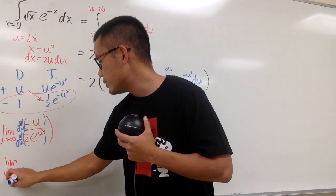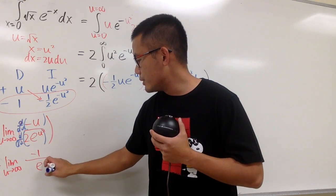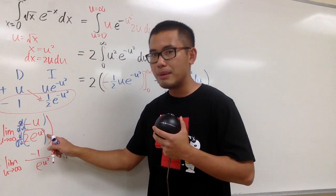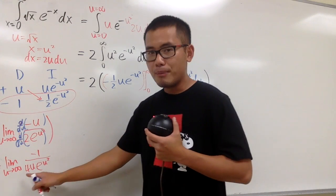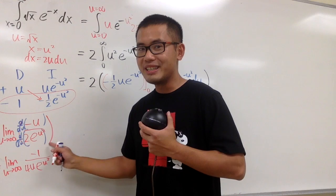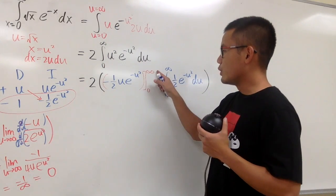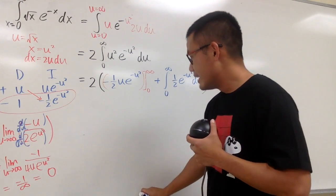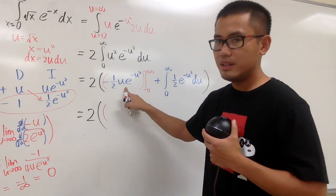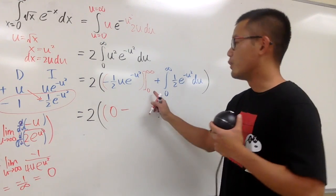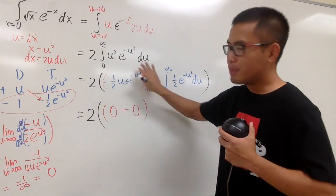Applying L'Hôpital's rule: the limit as u goes to infinity of negative 1 over [e^(u²) · 2u · 2] equals negative 1 over 4u·e^(u²). Plugging in infinity gives negative 1 over infinity, which is 0. And when we plug in 0, thanks to the factor of u, everything is also 0. So the boundary term contributes 0 altogether.